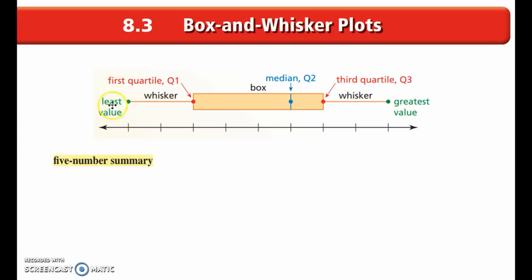We need five numbers: the least value, the first quartile, the median, the third quartile, and the greatest value. 1, 2, 3, 4, 5, to set up a Box and Whisker Plot. So that's called a five-number summary.